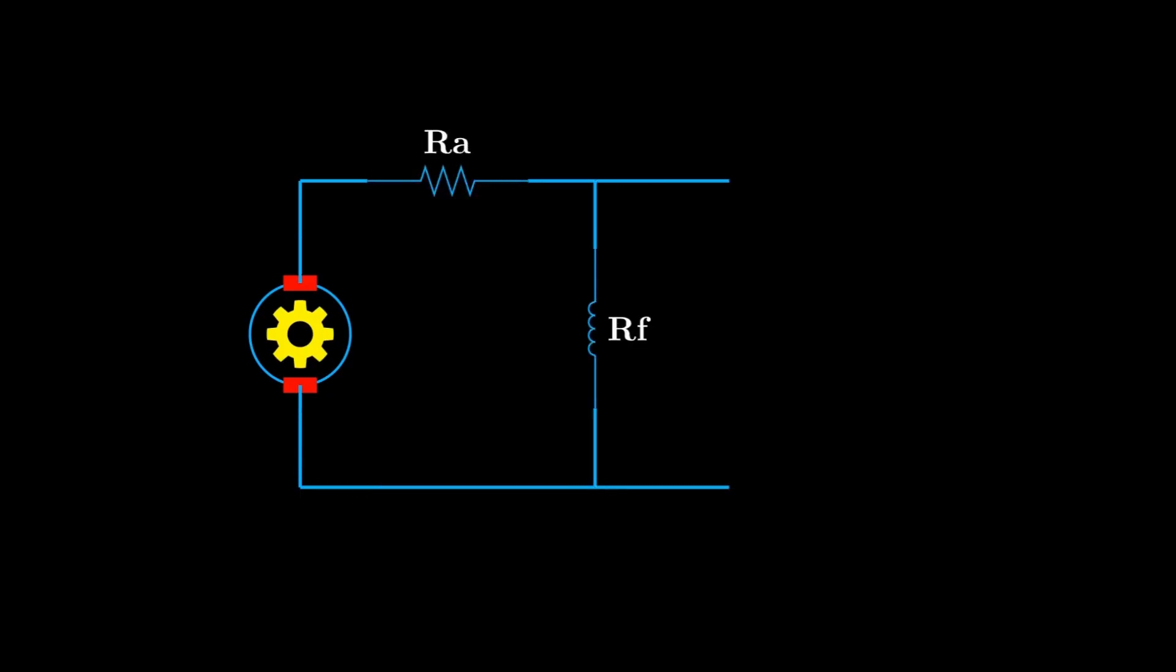Let's understand DC shunt generator voltage buildup. How does a DC generator seemingly from nothing begin to produce voltage?